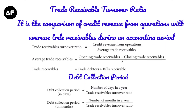When dealing with debtors, bills receivable — a bill of exchange — comes into the scene. The formula for average trade receivables is opening trade receivables plus closing trade receivables divided by two, where trade receivables equals trade debtors plus bills receivable.